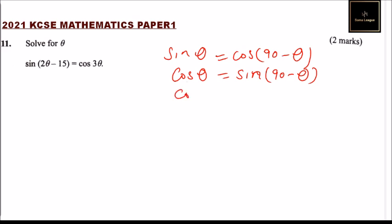This means that we can write cos 3θ equals sine(90 - 3θ), applying this rule. So we can come here now and replace it. We say sine(2θ - 15) equals...